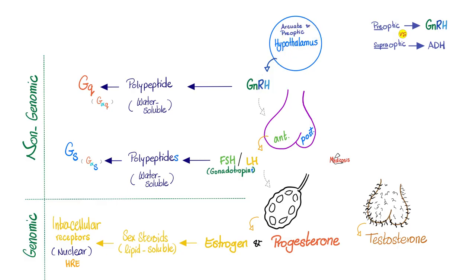The hypothalamus makes GnRH, which stimulates the anterior pituitary to make the gonadotropins FSH and LH, which will go to the ovary and tell the ovary to make the female hormones, estrogens and progesterone. And as you know from previous videos, these are sex steroids.